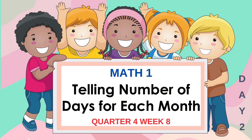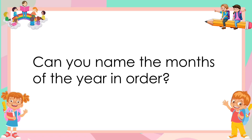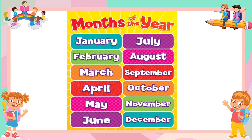Day 2 — Telling the number of days for each month. Students, can you name the months of the year in order? Here are the months of the year: starting with January, February, March, April, May, June, July, August, September, October, November, and lastly, December.